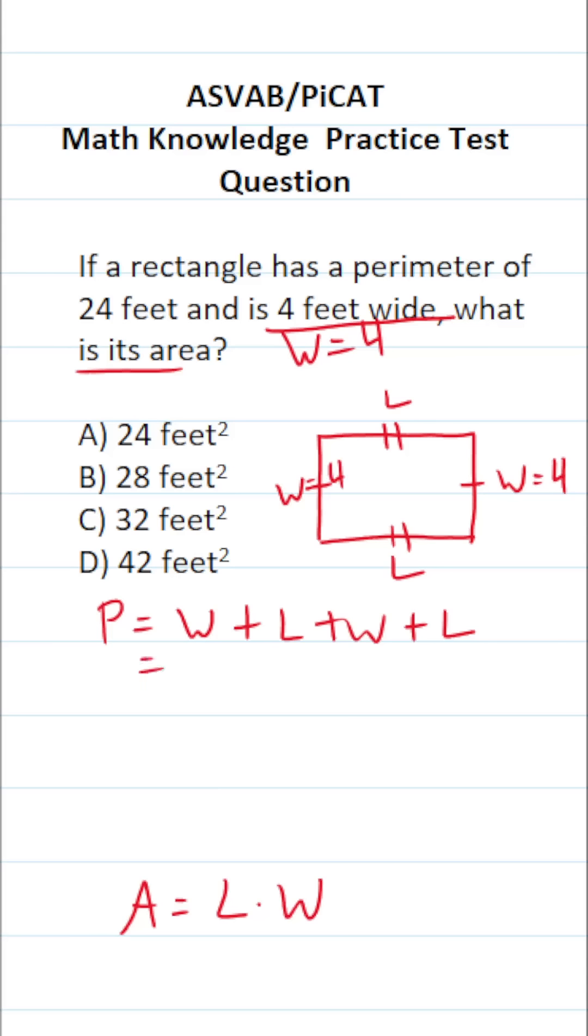So in the perimeter formula, I'm going to replace width, our W with 4. So this becomes 4 plus length plus 4 plus length. Likewise, I'm going to come down here to the area formula and replace width with 4. So as you can probably tell right now, the only thing we really need to determine is the length of this rectangle in order to find its area.